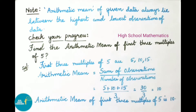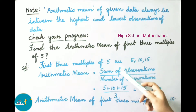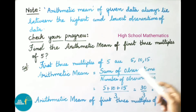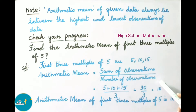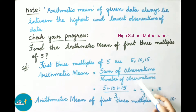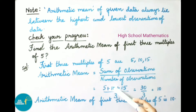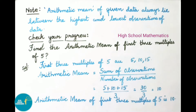The first 3 multiples of 5 are 5, 10, and 15. Arithmetic mean equals sum of observations divided by number of observations = (5 + 10 + 15) / 3 = 30 / 3 = 10. Therefore, the arithmetic mean of the first 3 multiples of 5 is 10.